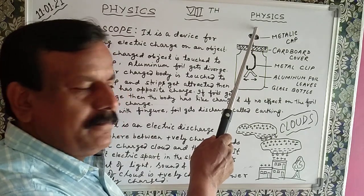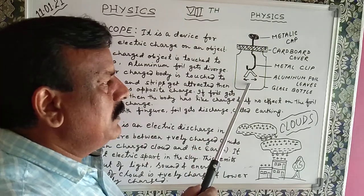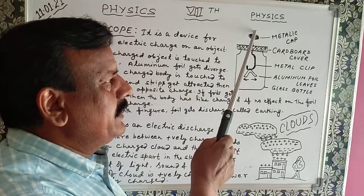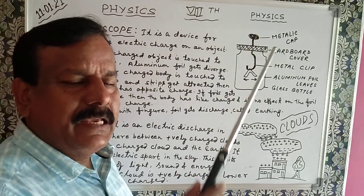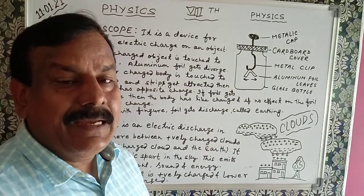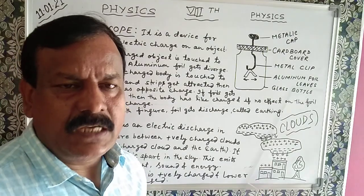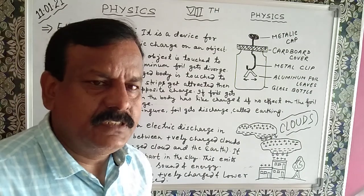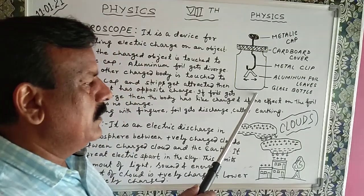And third one is if there is no effect on these leaves by touching the object here, it means that object is neutral, having no charge. So this way we can detect a charged body and uncharged body, and the nature of charge by using this device.